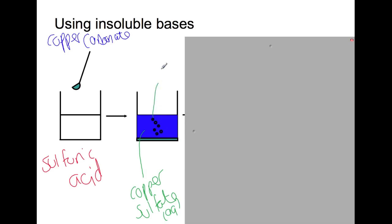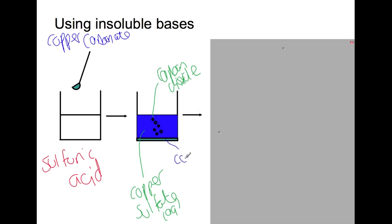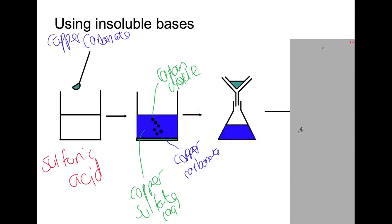It also produces a gas, carbon dioxide. If we add too much copper carbonate, we get an excess of copper carbonate left over. However, because it's insoluble, when you see excess at the bottom then you know that you have neutralized all of your sulfuric acid and there's nothing else for the copper carbonate to react with. When the reaction completely stops giving off carbon dioxide, at this point you can filter off the excess copper carbonate and you get your copper sulfate solution which you can then heat to produce copper sulfate crystals.